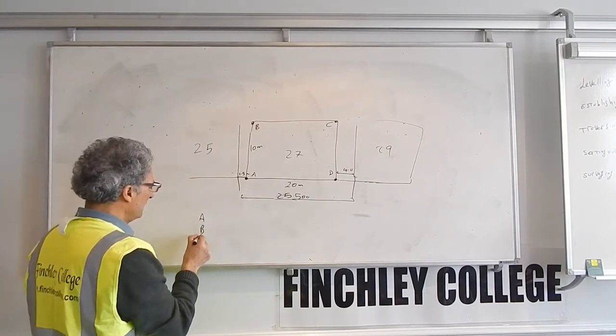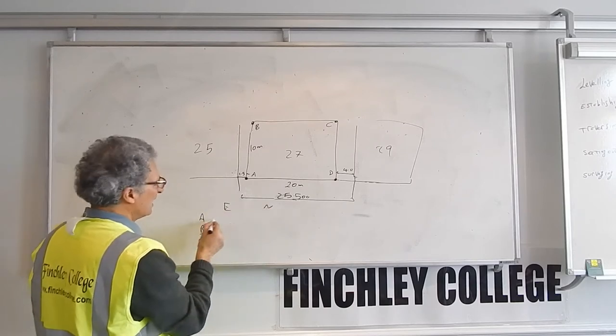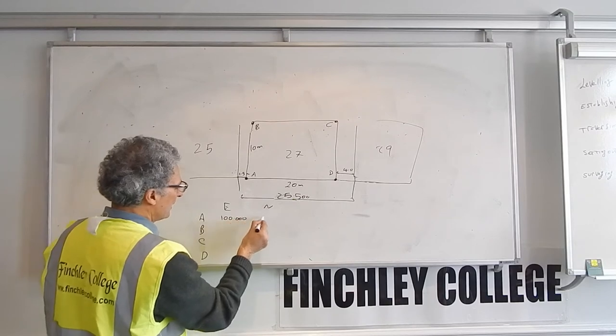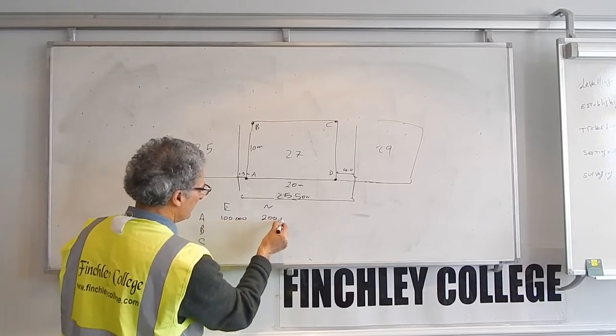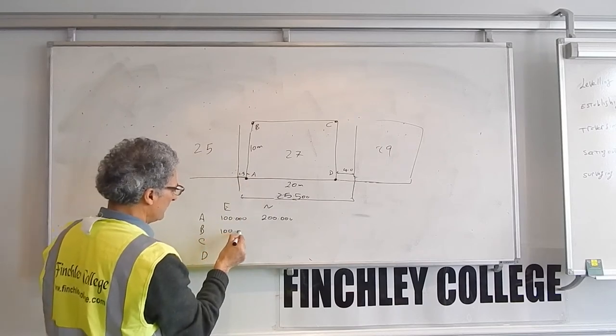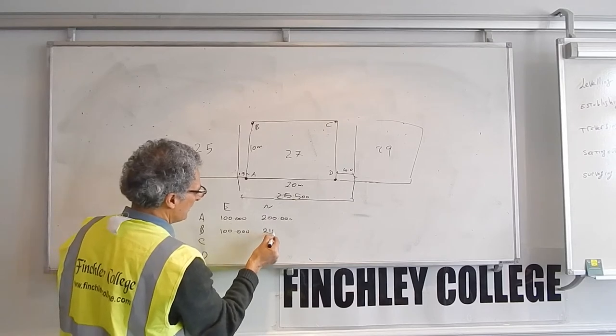Point A, point B, point C, and point D, easting and northing. A, I give it for example, easting 100 meters and northing of 200 meters. B will have the same easting, would be 100 meters, and the northing would be 200 plus 10, would be 210 meters.